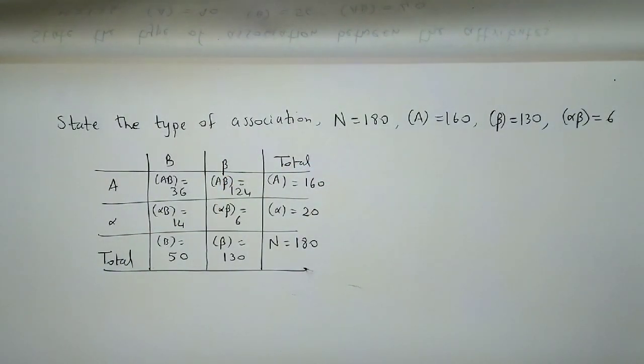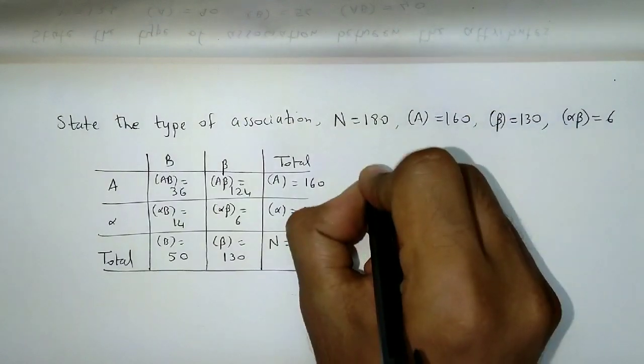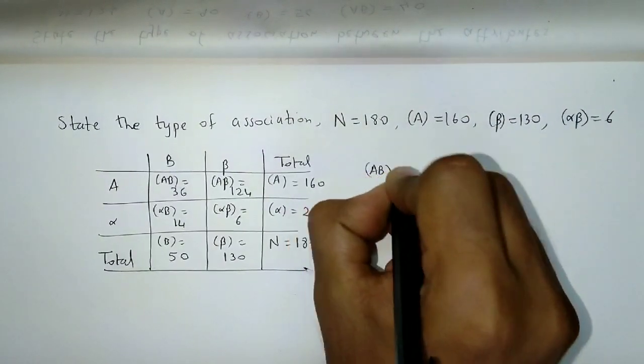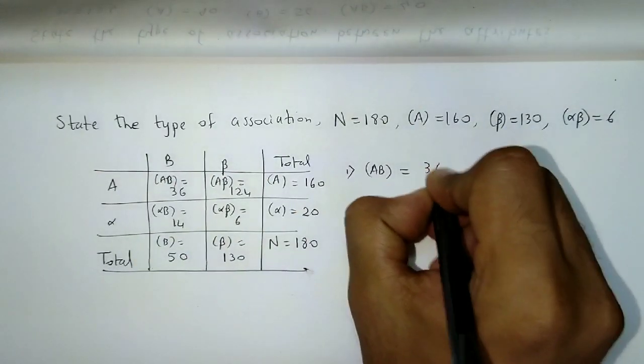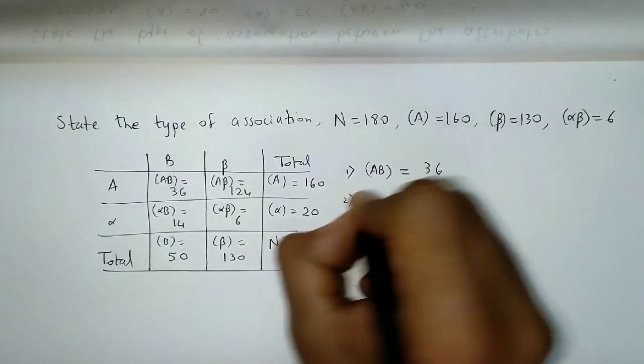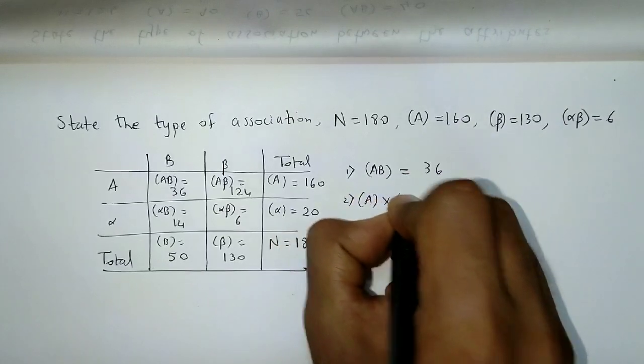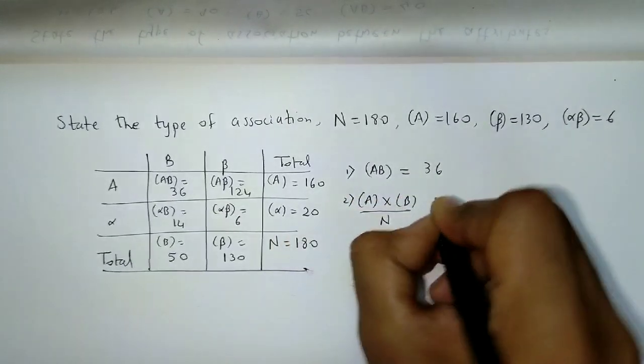Now, if you want, you can use Yule's coefficient or the comparison method. Let's try the comparison method. So, first step is you mention AB frequency. The AB frequency, if you observe, it is 36. Second, we calculate A into B upon N.